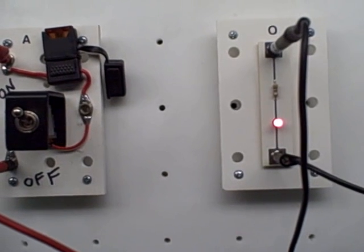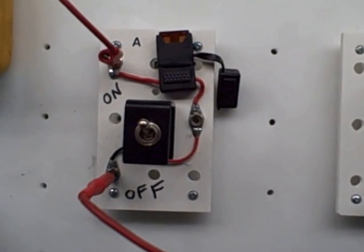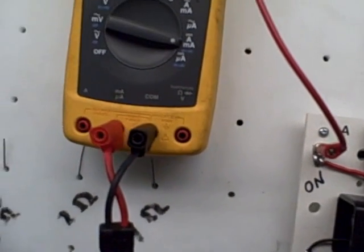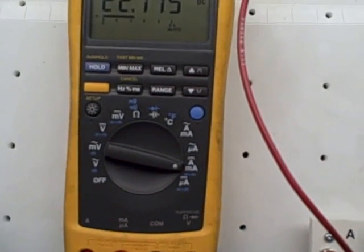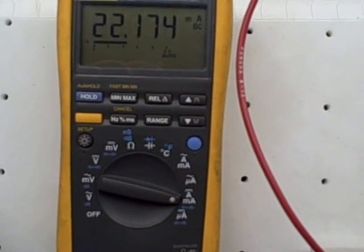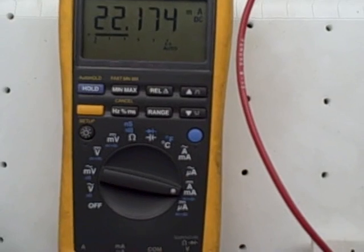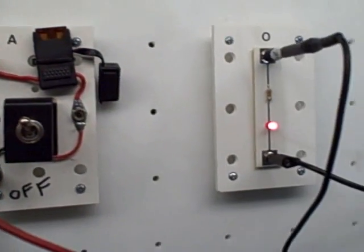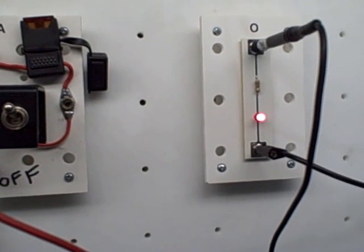Here I've powered up a light emitting diode through a switch and a spade type fuse. I am measuring the current in milliamps and we have 22 milliamps load to light the light emitting diode.